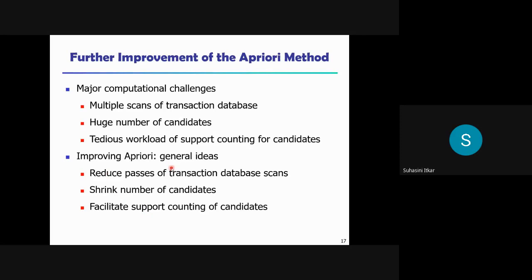Researchers tried to improve the Apriori algorithm using various ideas. The further algorithms basically tried to reduce the number of passes for the database scan. They also tried to shrink the number of candidates, and they facilitated support counting of candidates without scanning the database again. Using these ideas, improved Apriori algorithms also came into the picture.